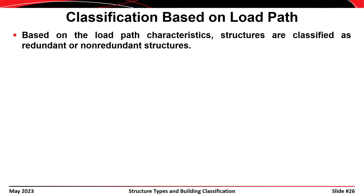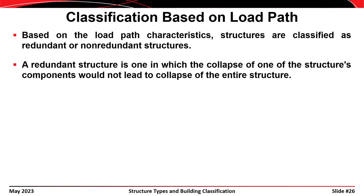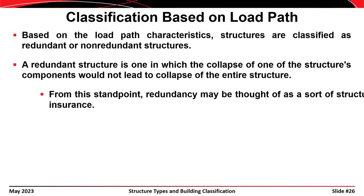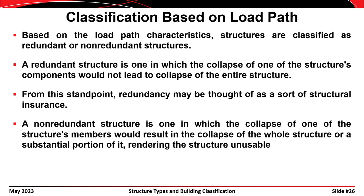Based on load path characteristics, structures can be classified as either redundant or non-redundant. A redundant structure is one in which the collapse of one member would not lead to collapse of the entire structure — you can think of structural redundancy as insurance, or a 'belt and suspenders' approach. A non-redundant structure is one in which the failure of one member results in collapse of the whole structure or part of it. This type of structure is sometimes referred to as fracture critical.